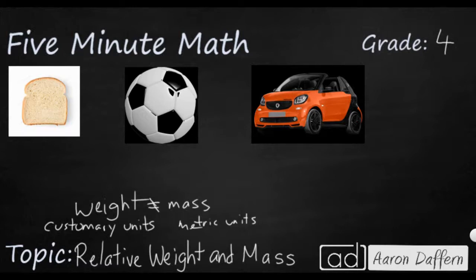But what we need to do is we need to just look at these three objects. We have our smallest object, the slice of bread, and it's about one ounce. So think about just one slice of bread. It's pretty light. And if you get 16 ounces, abbreviated OZ, that's going to get us our next biggest object, and that's a pound.